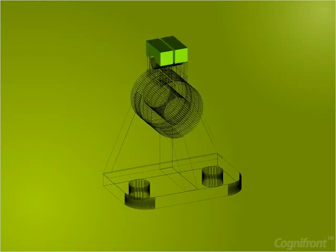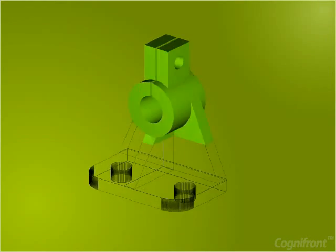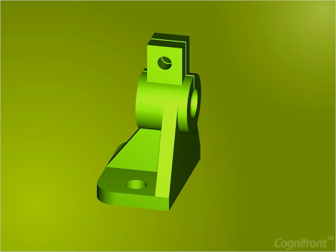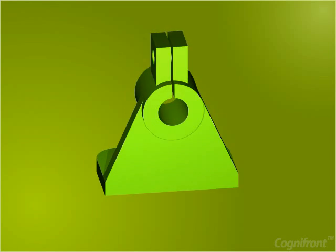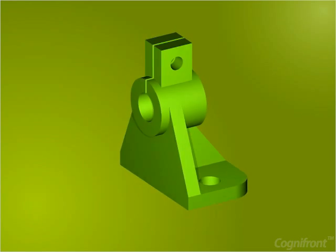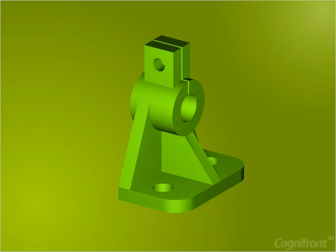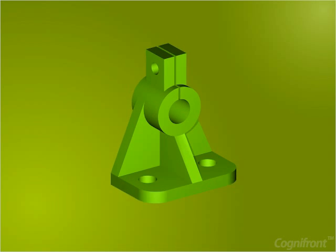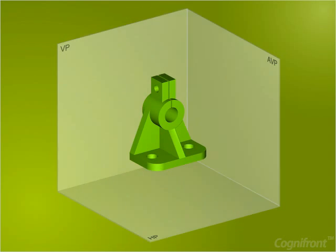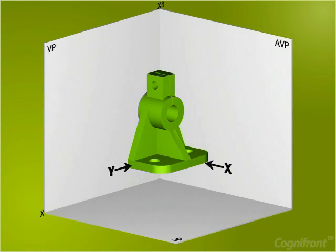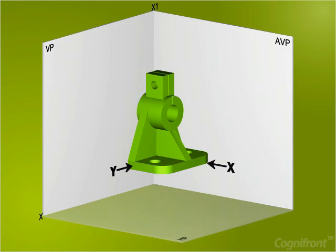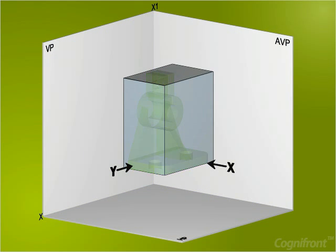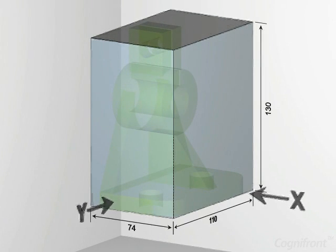Dear students, welcome back. Now we will crack another problem in engineering drawing. The problem is to generate three views of this bracket object. As you can see, the object is placed at the intersection of three planes: a horizontal plane HP, a vertical plane VP, and a profile plane AVP.